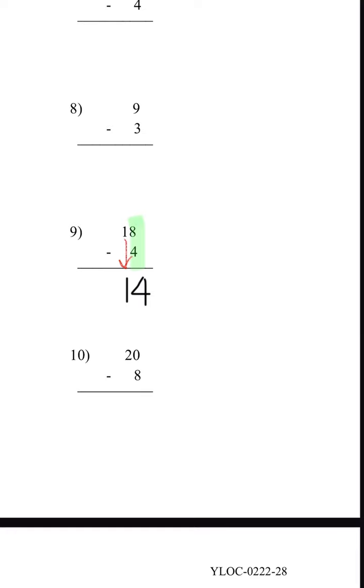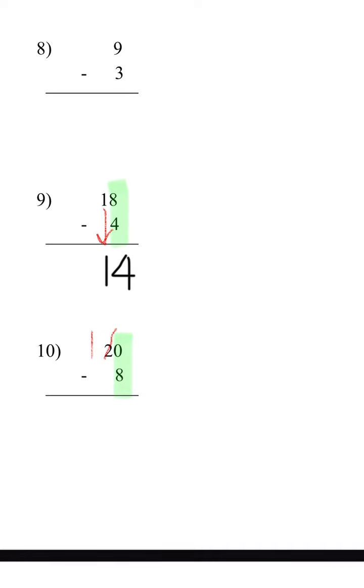Number 10. We have 20 minus 8. We start with the 1's place. But we can see that 0 is less than 8. The top number is less than the bottom number. So we're going to have to borrow 1 ten from the 10's place. That 2 is going to become 1, because 2 minus 1 is 1. And we're going to add 1 ten to the 0, so that would be 10. Now we're going to think this 0 as a 10. So 10 minus 8 is 2. And this 1 comes down. That makes it 12.